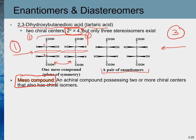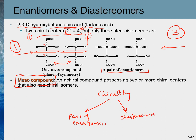To recap: pairs of enantiomers are non-superimposable mirror images of each other. Diastereomers are stereoisomers that are not mirror images of each other. Meso compounds are achiral but possess two or more chiral centers — they are achiral because they have a plane of symmetry. Meso compounds always have a plane of symmetry.